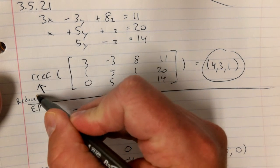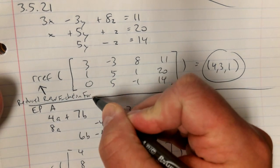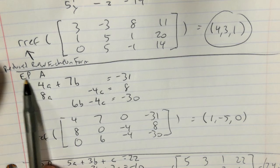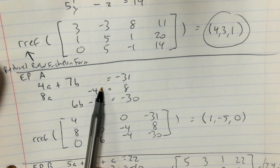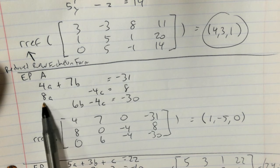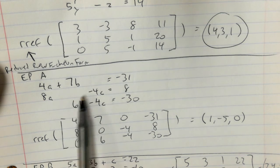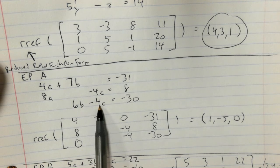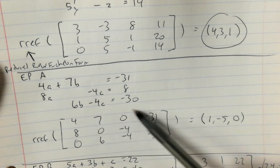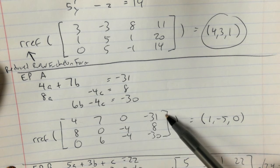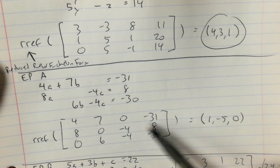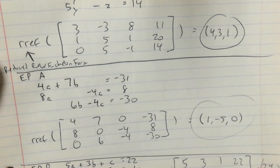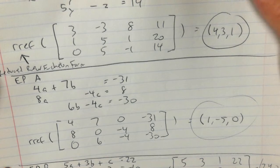This is your reduced row echelon form, which everybody just calls rref. For extra practice A: 4a + 7b, no c term, equals −31; 8a, no b, −4c equals 8; no a, 6b − 4c equals −30. Your matrix looks like: 4, 7, 0, −31; 8, 0, −4, 8; 0, 6, −4, −30. When you do rref you get 1, −5, 0 — that's your ordered triple. Remember it's an ordered triple, not an ordered pair, because a pair is two values.